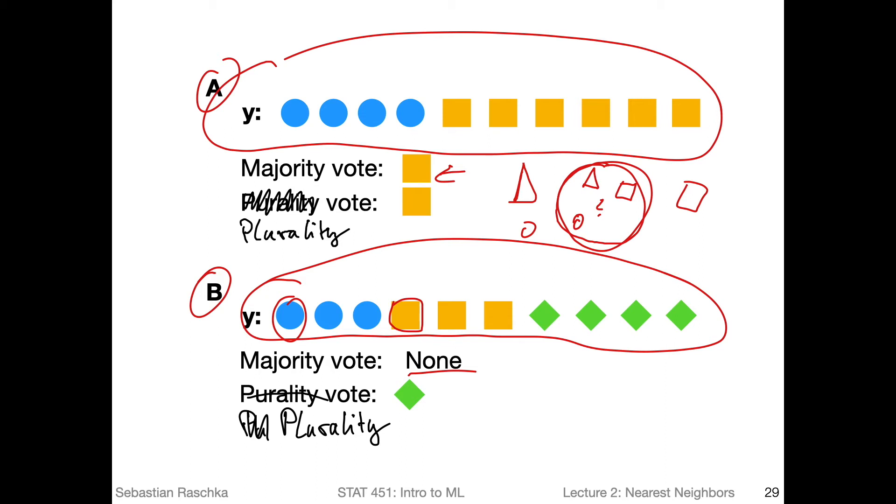So it's not a good thing to do, but that's how it works in most software packages. Usually in software packages you have integer class labels, let's say zero, one, two, and so forth. And usually the software, if there's a tie, would pick the one with a lower class label index.